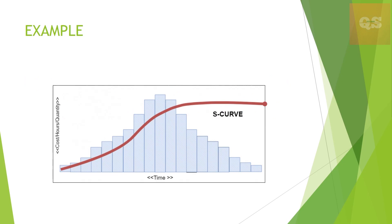Now let's see an example of how an S-curve looks like. This is basically what we call an S-curve. Here, if you see, time is the Y-axis and the X-axis can be the cost or the hours or quantity, and it comes in the shape of an S.